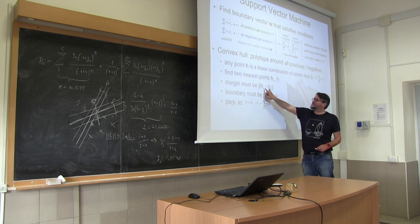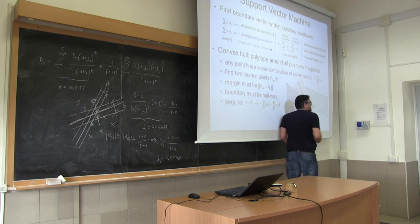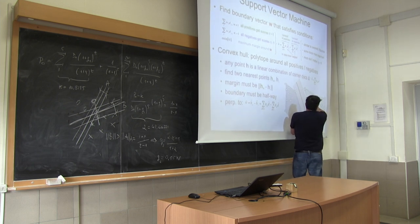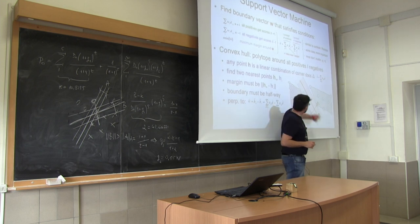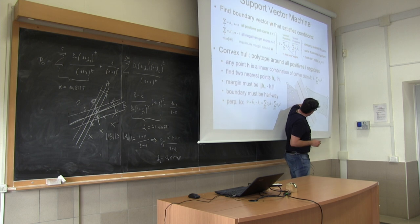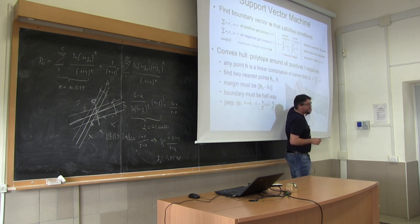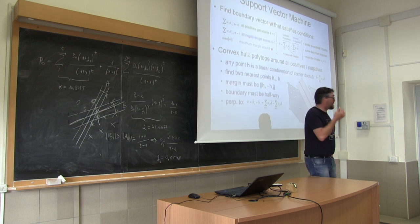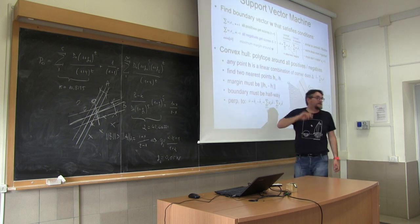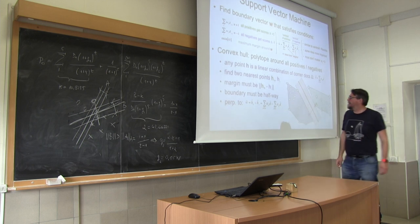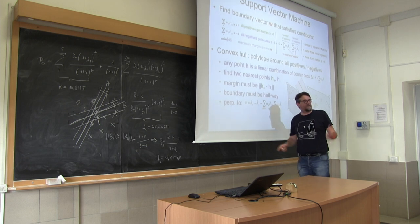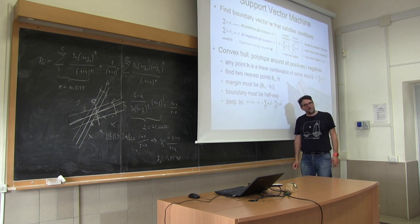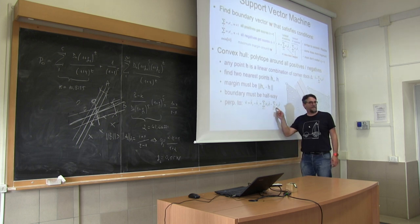This is clearly the closest. You can observe that the closest is not necessarily the corner point of the polytope. But since I can express any point as a linear combination of the polytope, I can translate this into: H plus is the linear combination of the positive documents, H minus is the linear combination of the negative documents. What I want to do is minimize this distance between H plus and H minus.